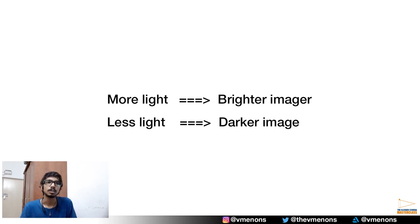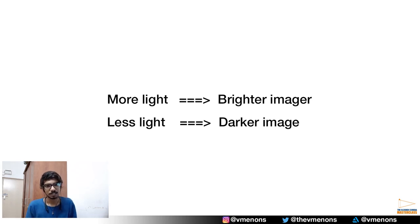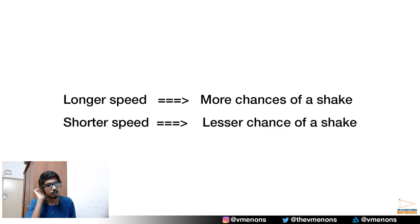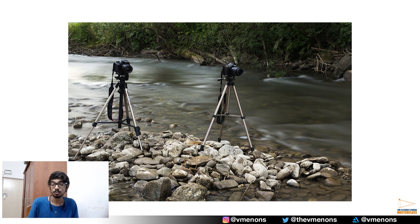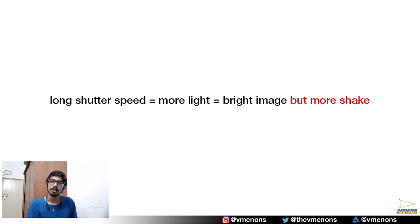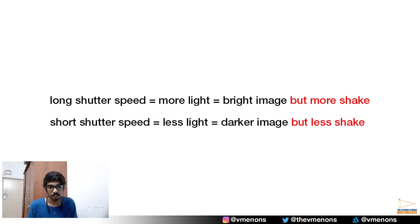You might think all you have to do is use a long shutter speed to get a bright image, but it doesn't work that way. When you use a longer shutter speed, the camera needs to remain steady — if you shake, your image will have a shake. A longer shutter speed means an increased chance of shake, whereas a faster shutter speed gives less chance of shake. That's why photographers use tripods, gorilla pods, monopods, gimbals, and more. A longer shutter speed gives more chance of shake; a shorter shutter speed gives less.